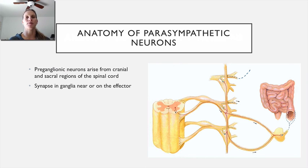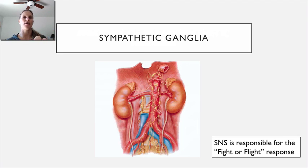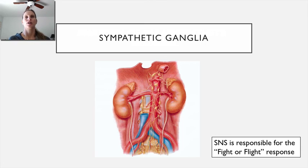The ganglia for the parasympathetic nervous system are right on or very close to the effector. The sympathetic ganglia are visible on either side of the spinal column — those bulges are bundles of neurons ending together, where the preganglionic ends and the postganglionic begins. That collection is the ganglia. We're going to move into sympathetic and parasympathetic responses in the next video, so I'll end this one and we'll pick up there.